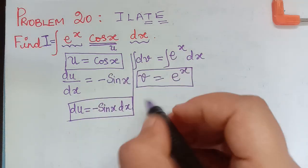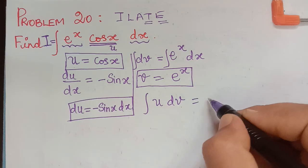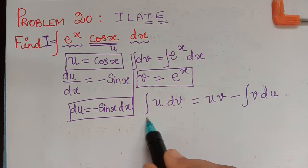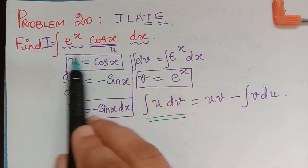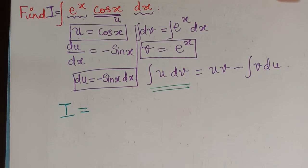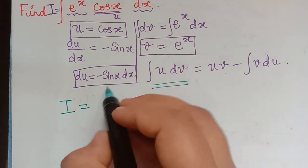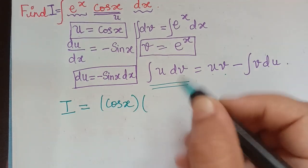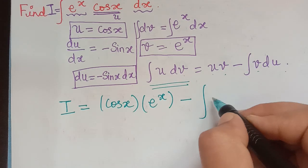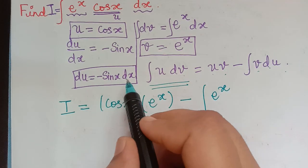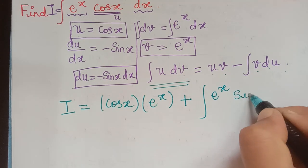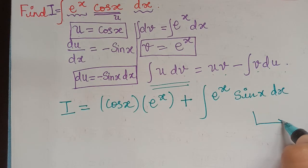Now we apply these in the formula: integral u dv equals uv minus integral v du. The given integral is represented as capital I, so capital I equals uv, which is cos x times e^x, minus integral of v du, where v is e^x and du is minus sin x dx. So minus times minus gives plus, and we have plus integral e^x sin x dx. Let us mark this as equation 1.